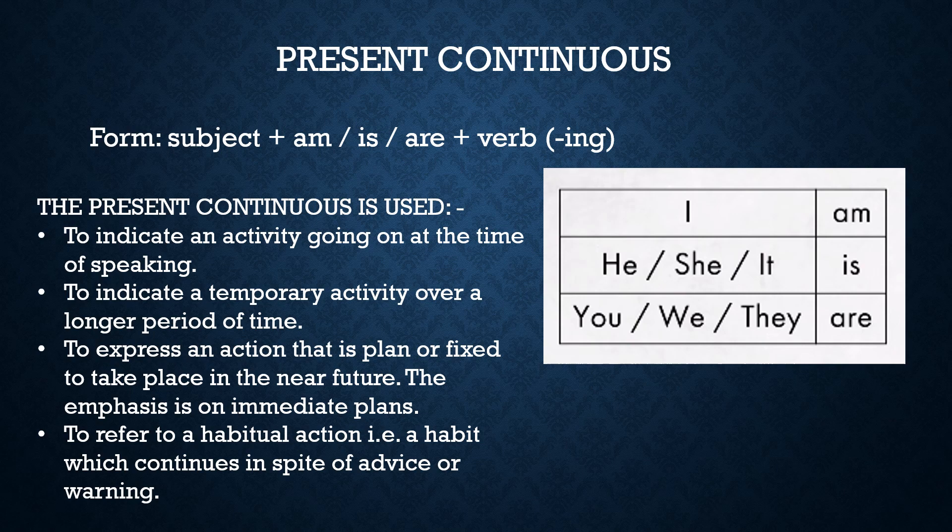The present continuous is used to express an action planned or fixed to take place in the near future, emphasizing an immediate plan — for example: 'I am going to finish this book today,' 'His father is arriving tomorrow.' It is also used to refer to a habitual action that continues in spite of advice or warning — for example: 'He is always interfering in my work,' 'He is always quarreling over petty things.'